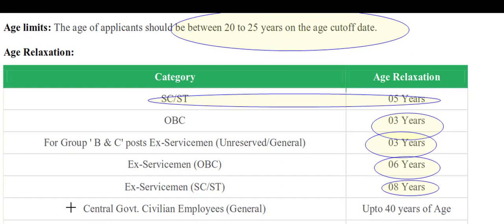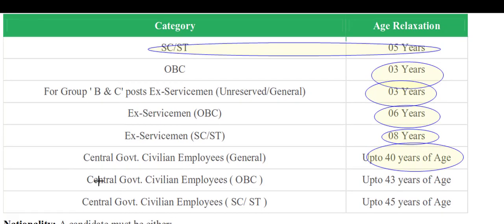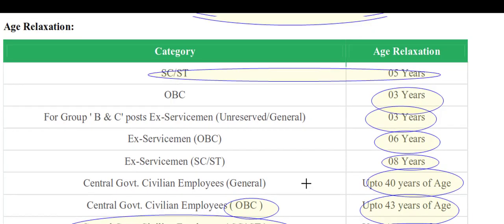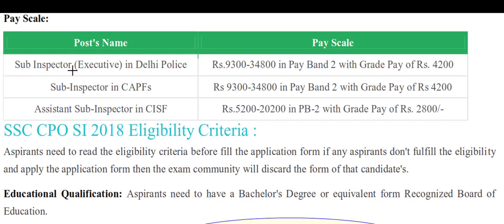If you are a central government civilian employee, the age limit is up to 40 years. For OBC central government civilian employees, it is 43 years, and for SC/ST central government civilian employees, it is 45 years of age.